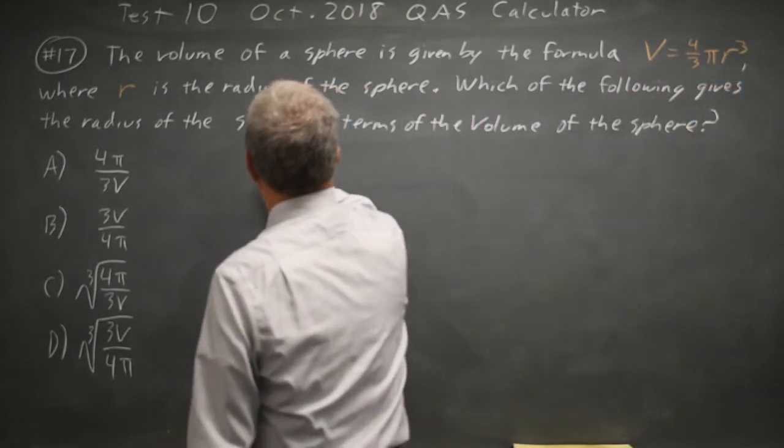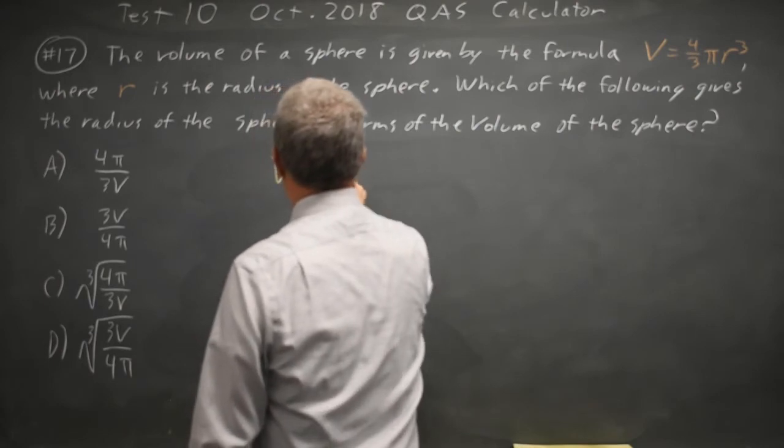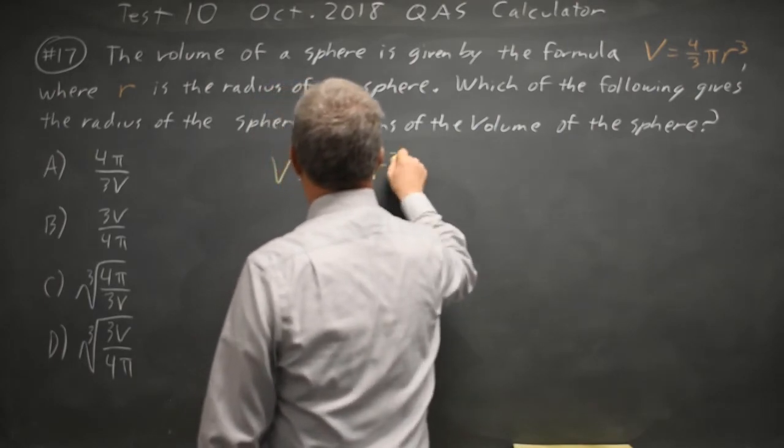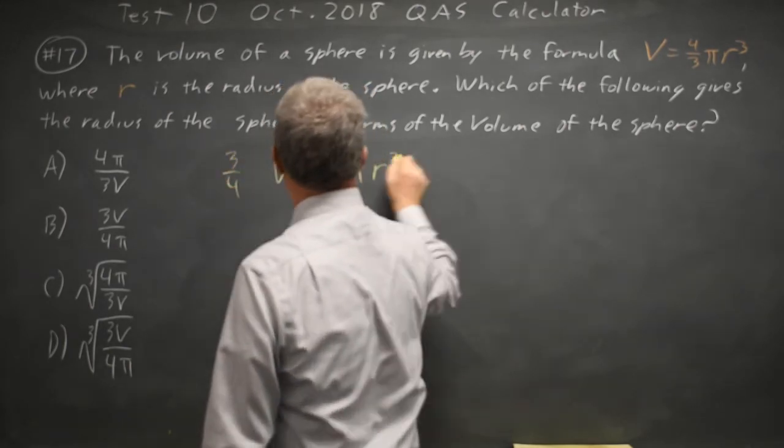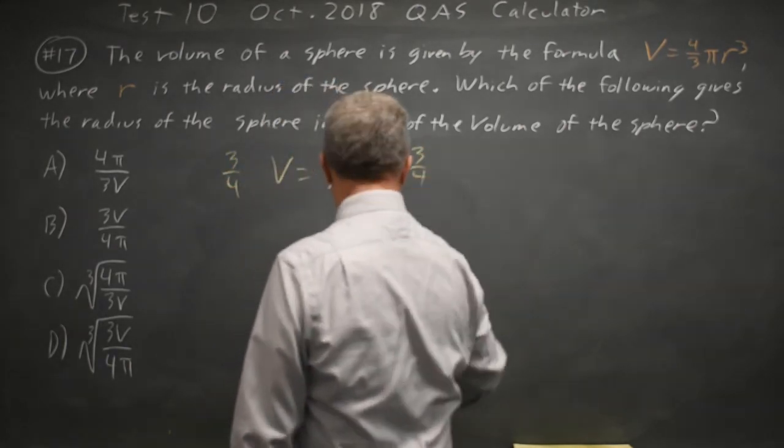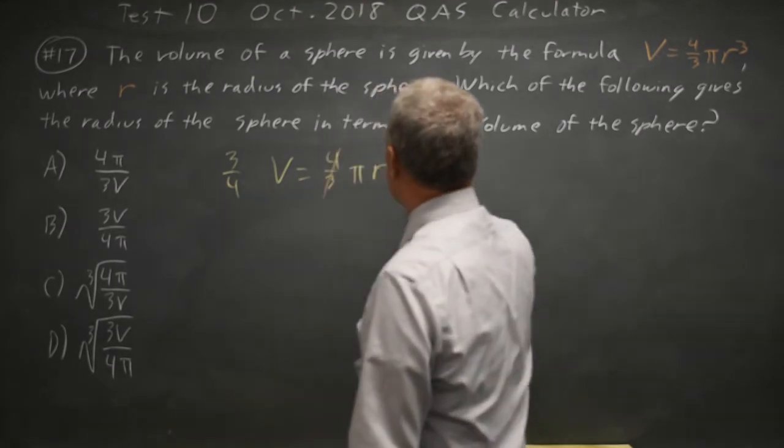So if I have v equals 4 thirds pi r cubed, let's multiply both sides by 3 fourths, and we're doing that because 4 thirds times 3 fourths is 1.